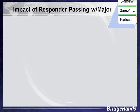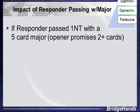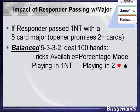Earlier we promised statistics to validate the benefits of Jacoby transfers. Let's examine what happens when responder has few points with a five-card major suit. Opener always promises at least two cards in that suit. We'll analyze a balanced responder hand of 5-3-3-2 shape using spades, running through a hundred hands comparing playing in no trump versus playing in two of the major suit.